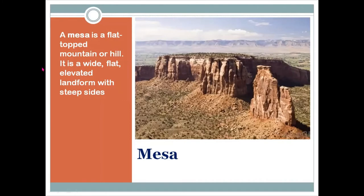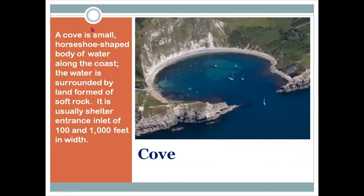We have another feature called mesa. A mesa is a flat-topped mountain or hill — a wide, flat elevated land form with steep sides. It is similar to the butte we discussed previously. A mesa is a flat-topped hill or mountain which has steep sides and is raised above the surrounding area, but its surface is smooth and flat.